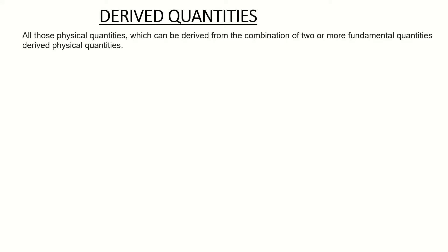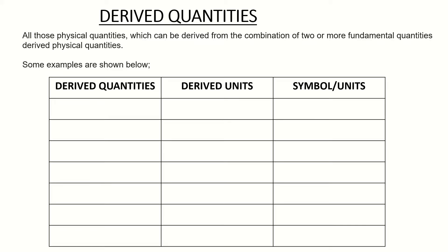Next we look at derived units. Derived units are a combination of two or more base units. In other words, derived quantities are derived from base units — formed by adding or multiplying two or more of the same or different base quantities. In the next few minutes I will show some examples of derived quantities in a table.